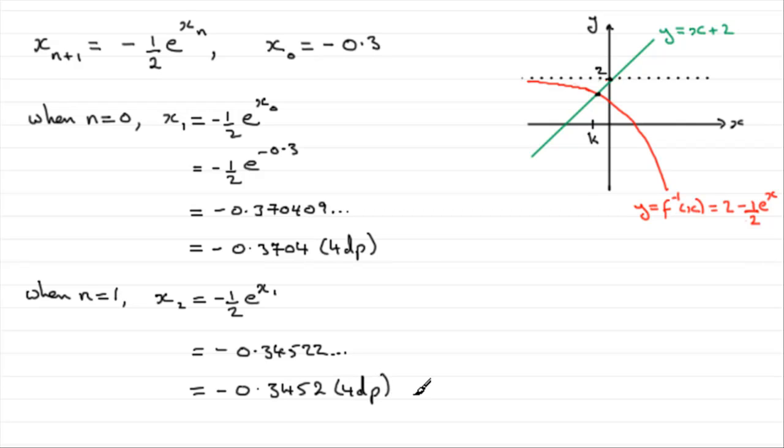I did say I'll just show you how they got this iterative formula, because there are questions out there where you have to show how they get an iterative formula. For this example, what we're doing basically is that at this point of intersection, we know that the y values would be exactly the same. The x plus two would equal the inverse function f to minus one of x, in other words it equals to minus a half e to the power x. So it would have x plus two equals two minus a half e to the power x.